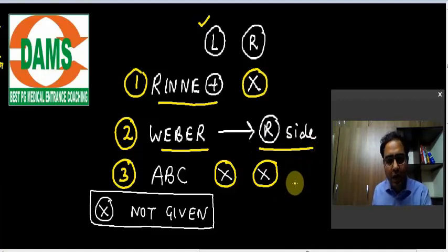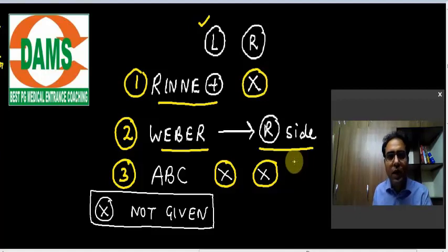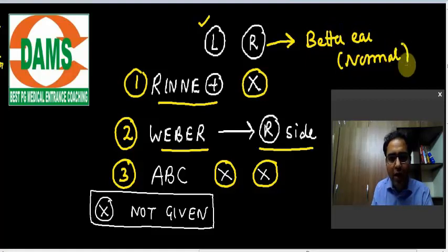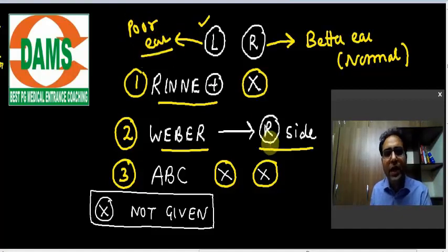Please understand most clinical vignettes are given in this incomplete format. Whenever they give you Rinne information only about one ear, please consider the other ear as the normal or better ear. In this question, only left ear Rinne findings have been given, so we should assume that the right side is normal — the better ear. We are assuming the patient is suffering from left-side hearing loss.